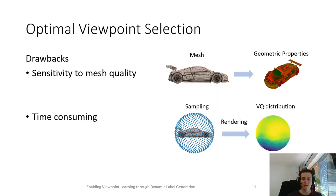Second, finding an optimal view is a very time consuming process, as it involves rendering the model from many different views to compute the view quality distribution, which can take several minutes for a single model.